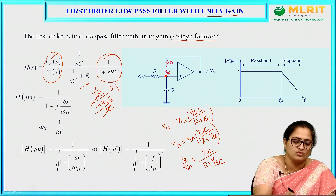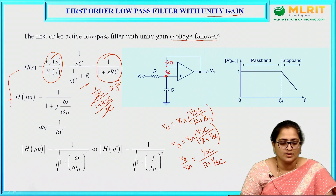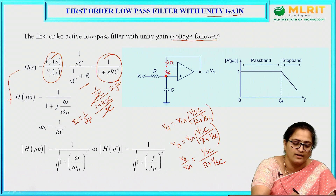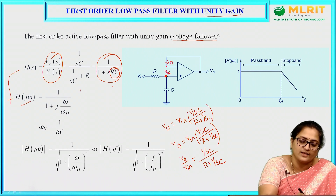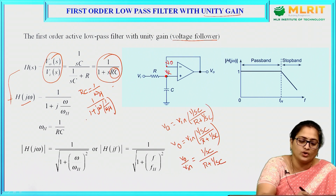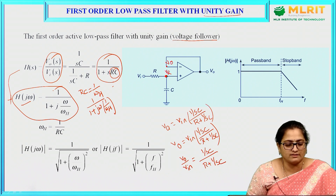Substituting s = jω, you can write H(s) as H(jω), which equals 1 divided by (1 + jωRC). Let us assume the product RC equals 1/ωh. Substituting s = jω and RC = 1/ωh, you can rewrite the expression as H(jω) equals 1 divided by (1 + j·ω/ωh), where ωh equals 1/RC.